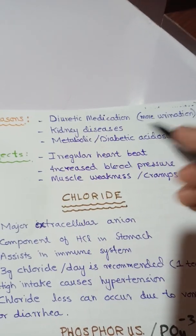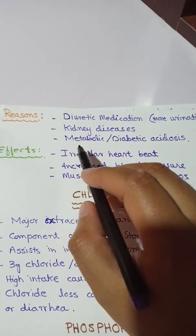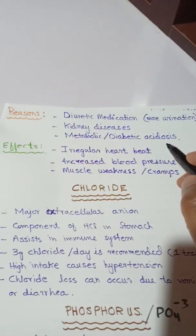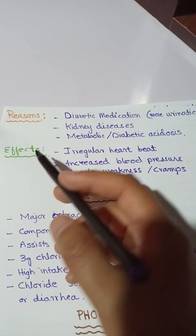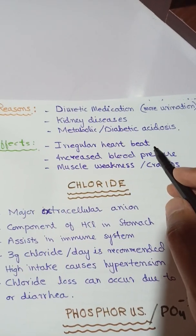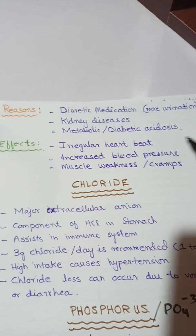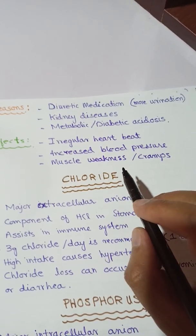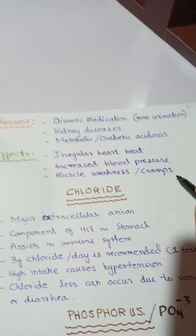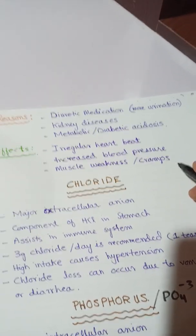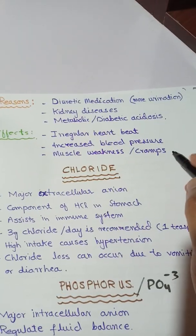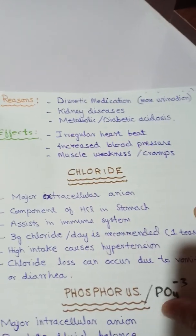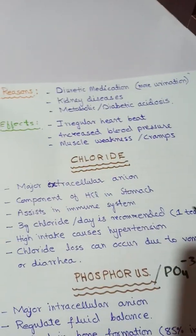In our future videos we will discuss metabolic or diabetic acidosis and alkalosis. The effects of hypokalemia on our body include irregular heartbeat, increased blood pressure, muscle weakness, and muscle cramps. Muscle cramps also occur due to low potassium level inside our body; if our potassium level is maintained, muscle cramps can be prevented.